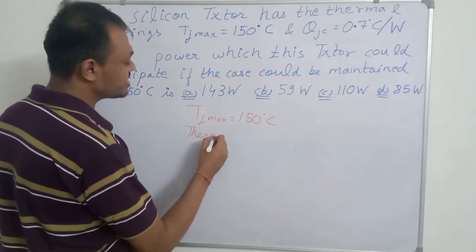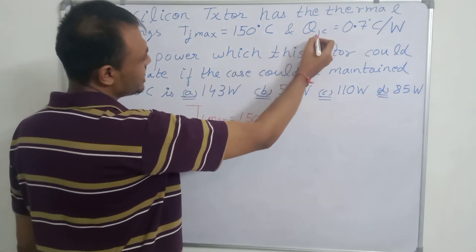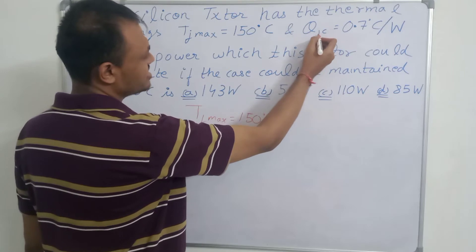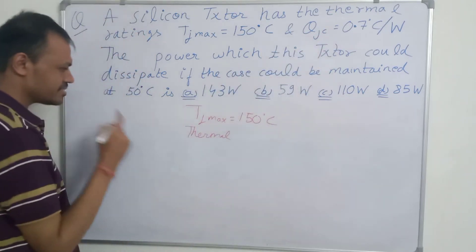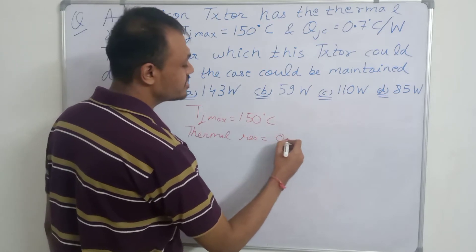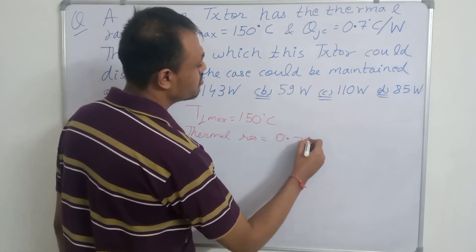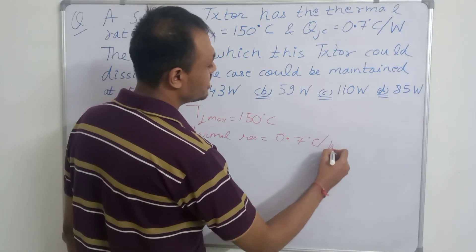It is thermal resistance between junction and case. J is junction and C is case. So, thermal resistance is given as 0.7 degree Celsius per watt, this is called as thermal resistance.